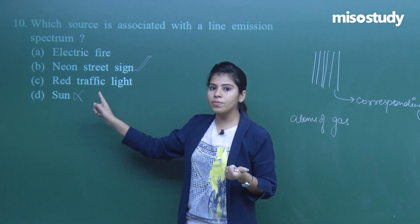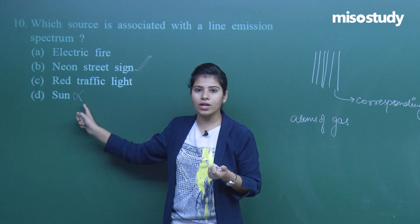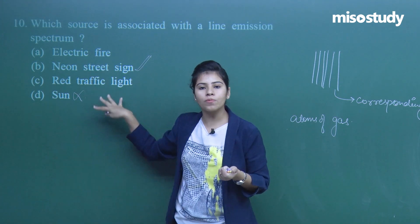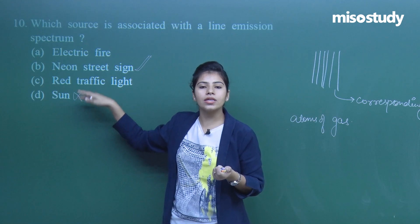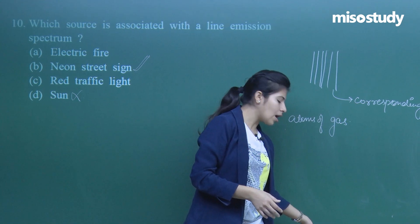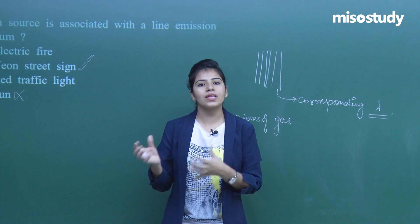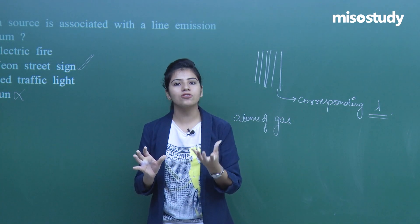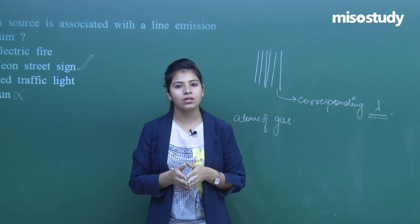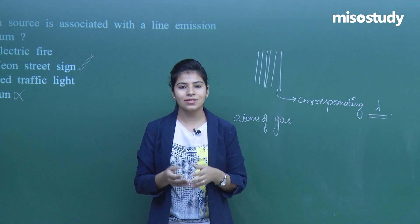As homework, find out what type of spectrum each of the four options — electric fire, neon street sign, red traffic light, and sun — produces, because such questions have appeared in the exam and may be asked again. Search it online so that it stays in your memory longer. These were today's questions regarding the NEET pattern. We'll meet again to discuss something important about the chapter. Take care, thanks a lot.